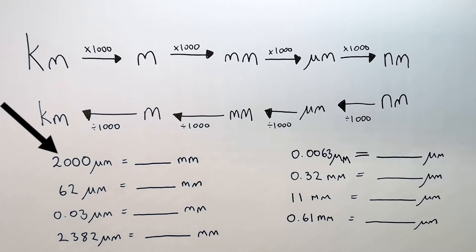Let's convert 2,000 micrometres to millimetres. So we know that if we go from micrometres to millimetres, you've got to divide 2,000 micrometres by 1,000, and that gives you an answer of 2 millimetres.